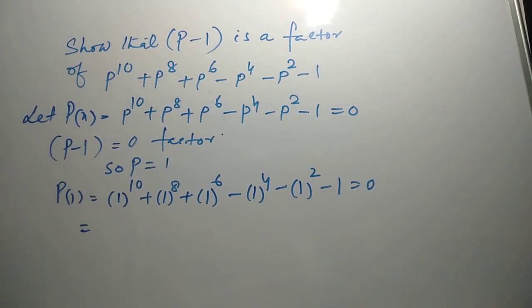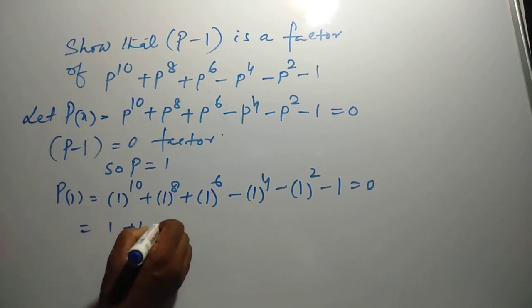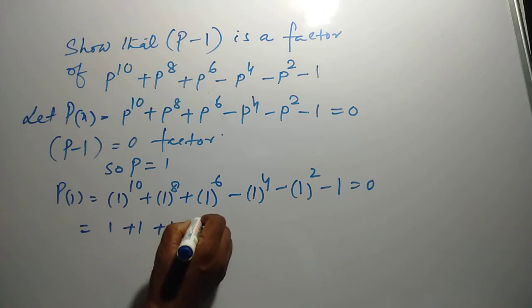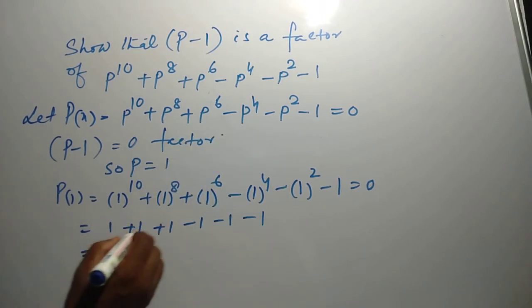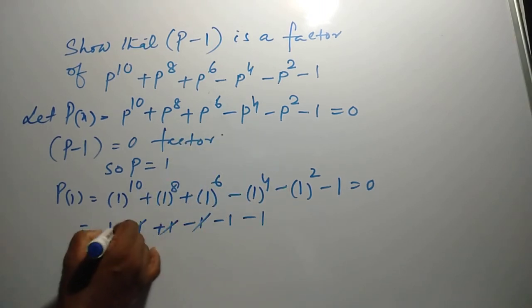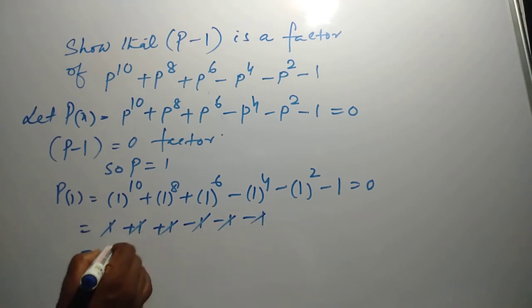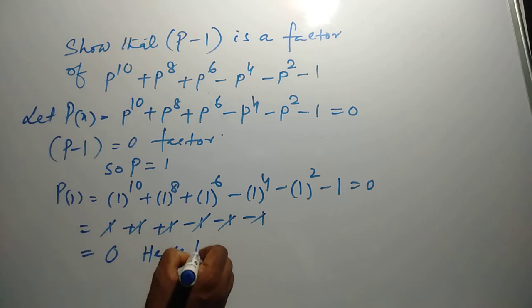It is 1 plus 1 plus 1 minus 1 minus 1 minus 1. Finally all are cancelled, giving 0. Hence proved.